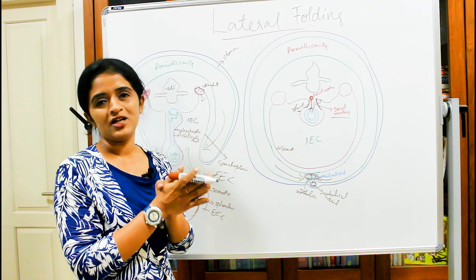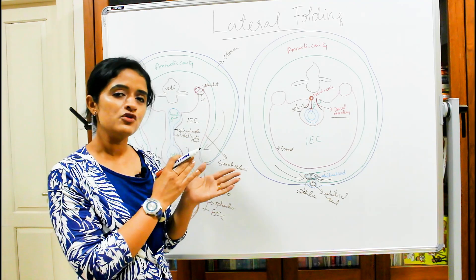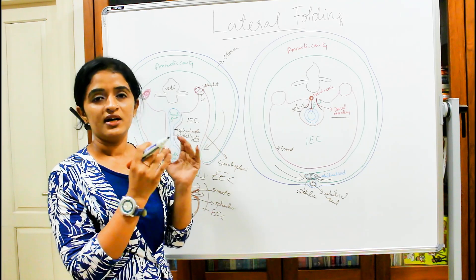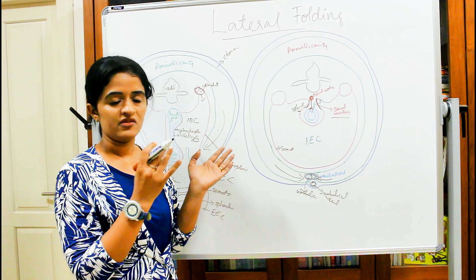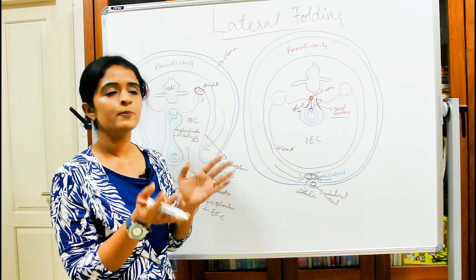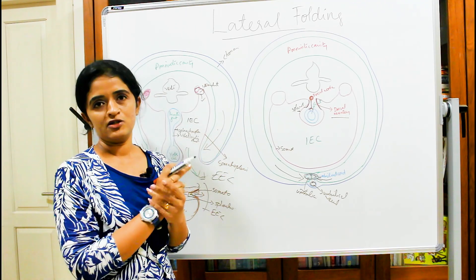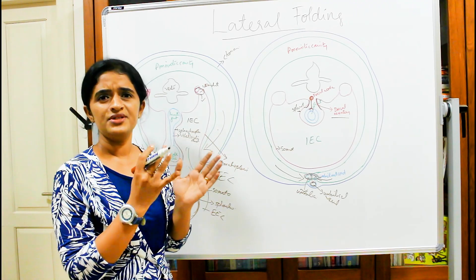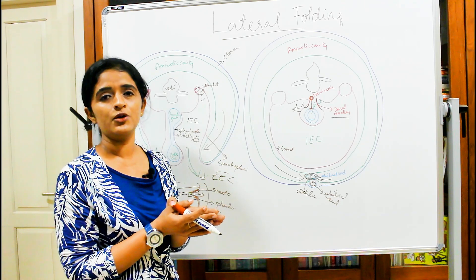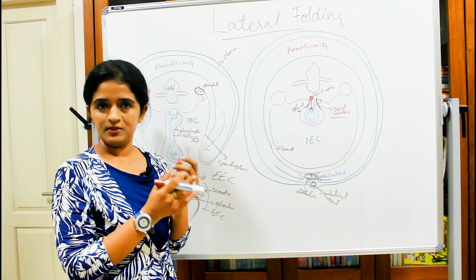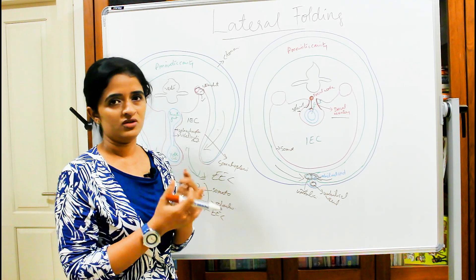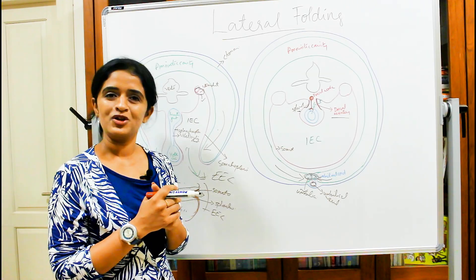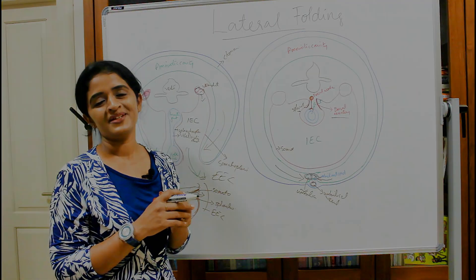So those are the two foldings — craniocaudal (cephalocaudal) folding and lateral folding of the embryo. In the coming sessions we will see the derivatives of the gut tube, the blood supply, the rotation, and the remaining topics. Keep watching — thank you.